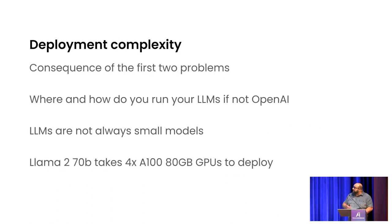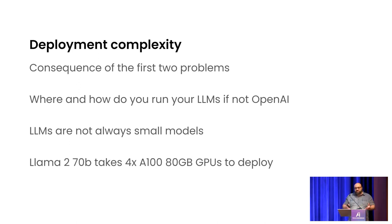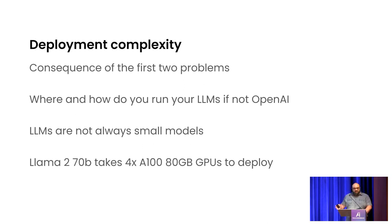The deployment complexity really comes from those first three problems of cost, quality, and data privacy. If you're not going to run your LLMs at OpenAI, what are you going to do? It's not such a big deal with small models — a Llama 7B model can run on a G5 2xlarge costing about a dollar an hour on AWS. But there are use cases that need the full power of big models like Llama 2 70B. When you try to deploy Llama 2 70B, you discover you need at least four A100 GPUs, 80 gigabytes each.